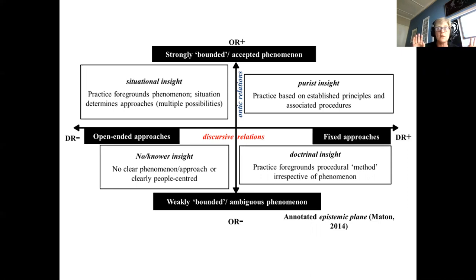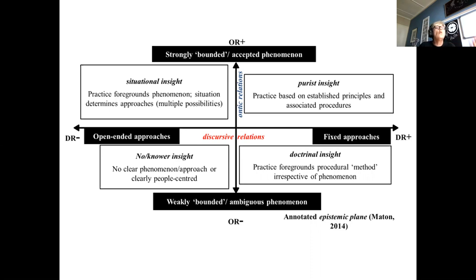If you move down to the bottom right, you'll see doctrinal insight - it doesn't matter what the thing is being addressed, what's foregrounded is a method or way of doing things irrespective of the phenomenon. When you shift up to the top left, it's not the how that matters but the thing in itself is important - the situation will tell you how to do it, calling for multiple possible approaches. And in the bottom left quadrant - a lot of education sits right here - we don't know what the phenomenon is at the heart of a practice, so we don't even know how to approach it.